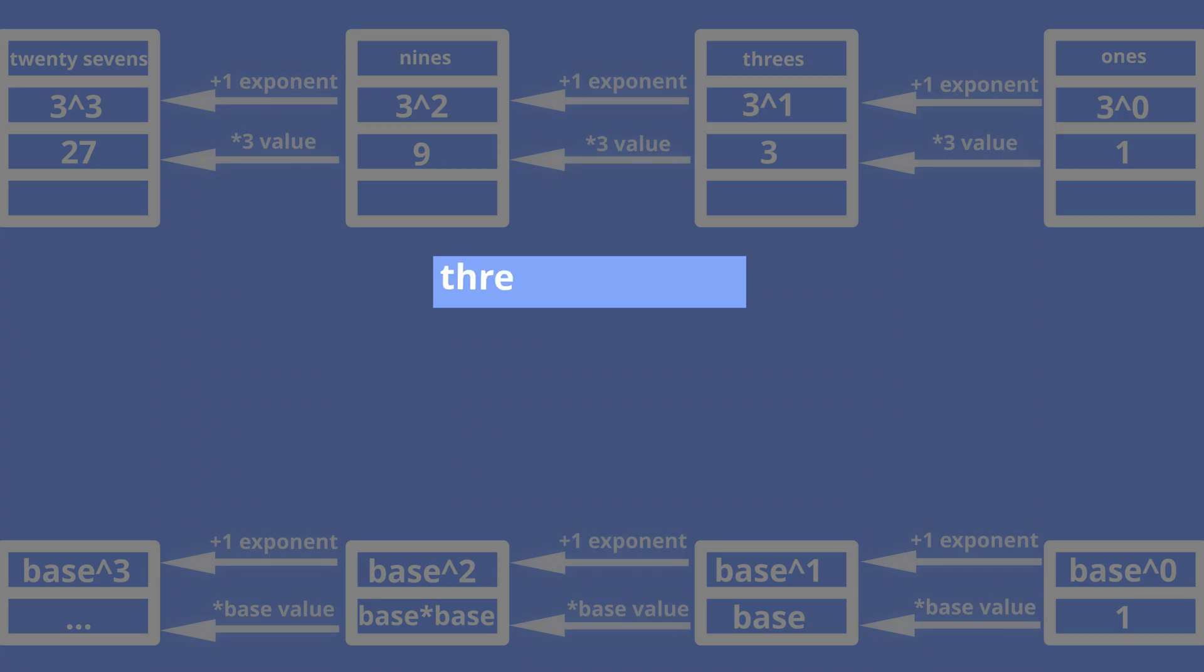In the base 3 number system we have 3 digits: 0, 1, and 2. These digits can occupy these positions. I marked the digits of the base 3 number system with magenta color.